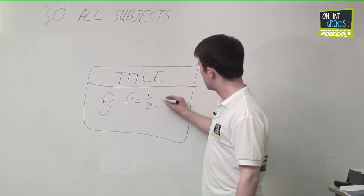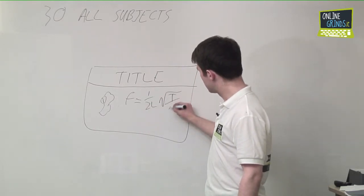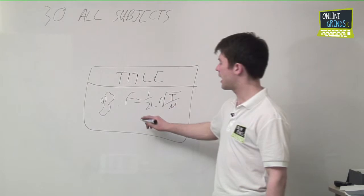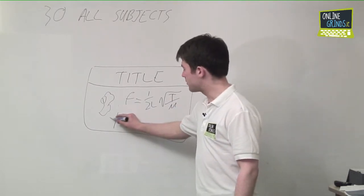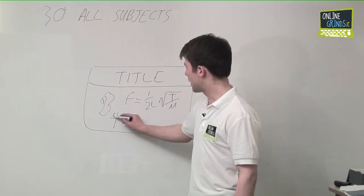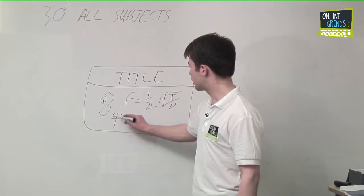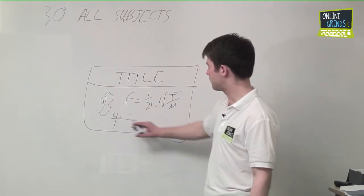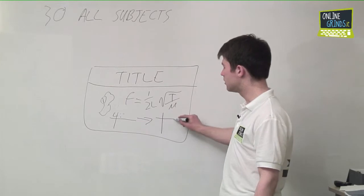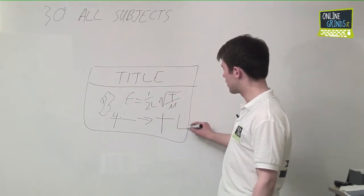And then obviously the units for there, what your data table would look like, you'd have your L and your, or whatever two variables you're putting, how you'd change that table, and then your diagram.